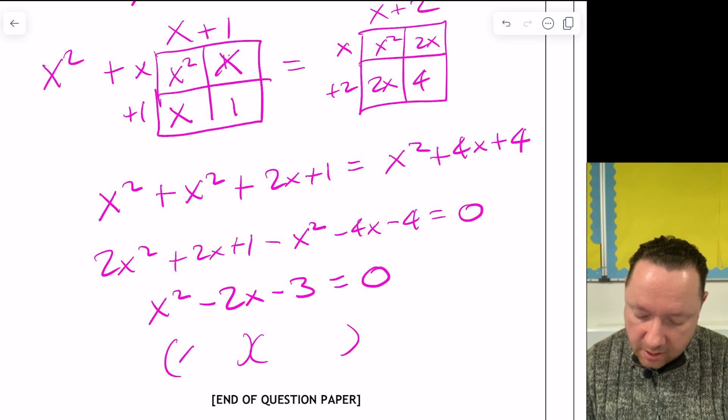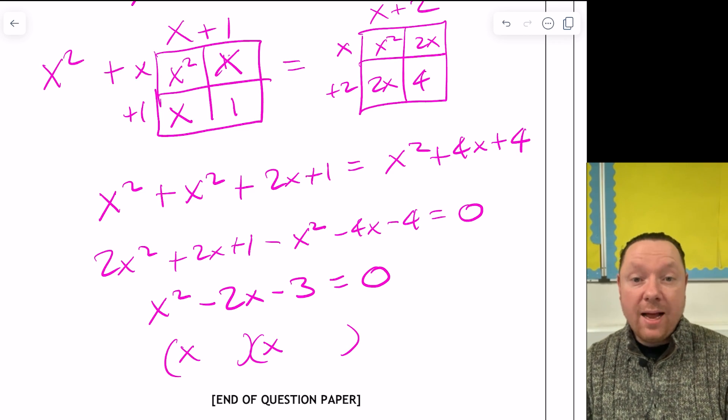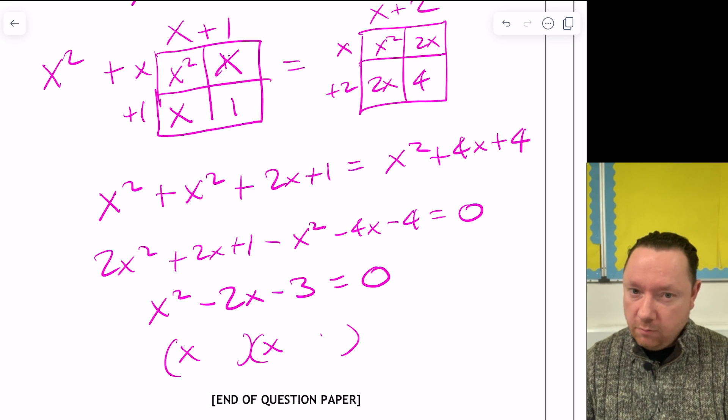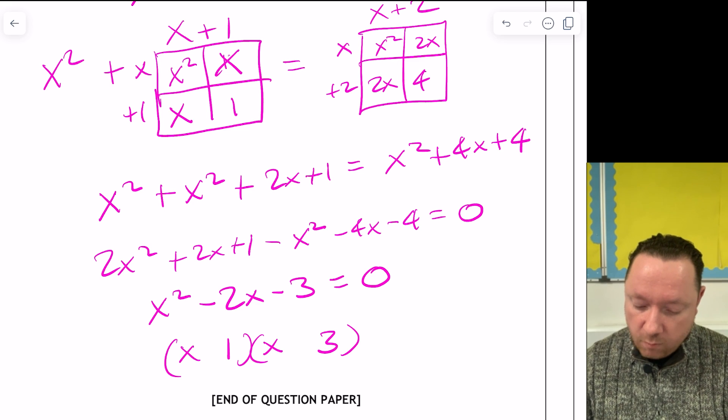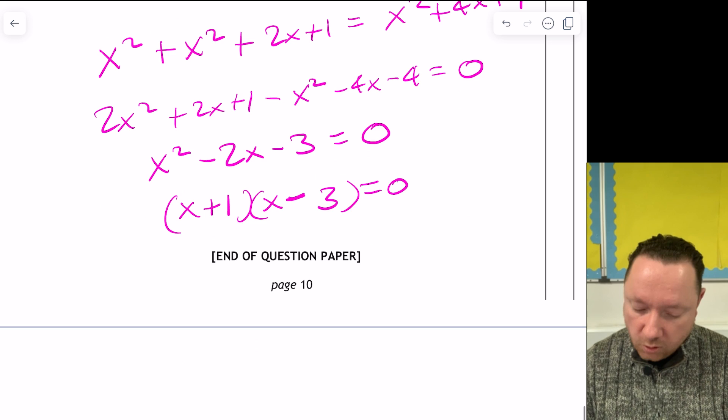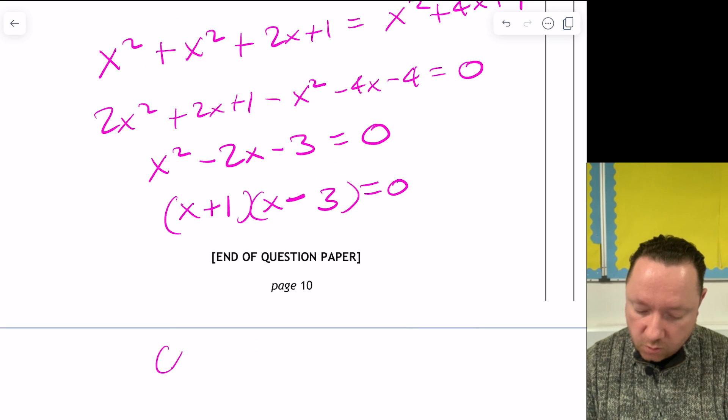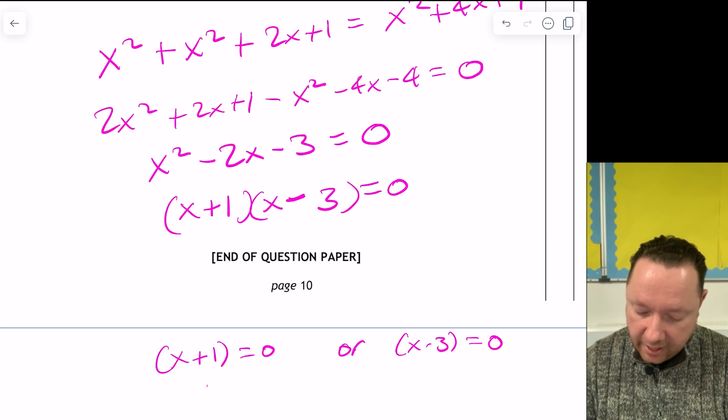So trying to factorise it. It's double brackets because there's no common factor. And for 2x times there, I make 3, but I add to make 2. Well, 3 and 1. And I say add, but it can be takeaway. And then I want minus 3. So 1 of them is minus, and I want minus 2. So it's minus 3 plus 1 equals minus 2. So now I'm almost done. That means that x plus 1 equals 0, or x minus 3 equals 0. So that means that x equals minus 1, or x equals 3.